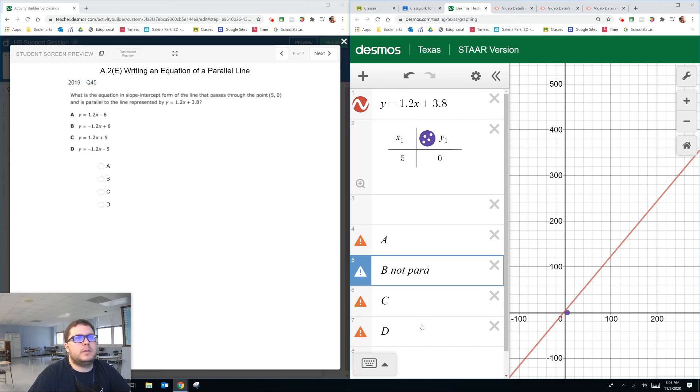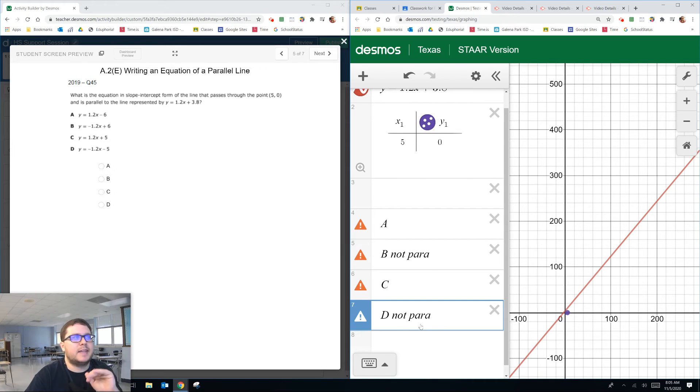So B is not parallel. D is not parallel. And this is exactly how I show my kids to do it. Use this to eliminate answer choices and to keep track of it.